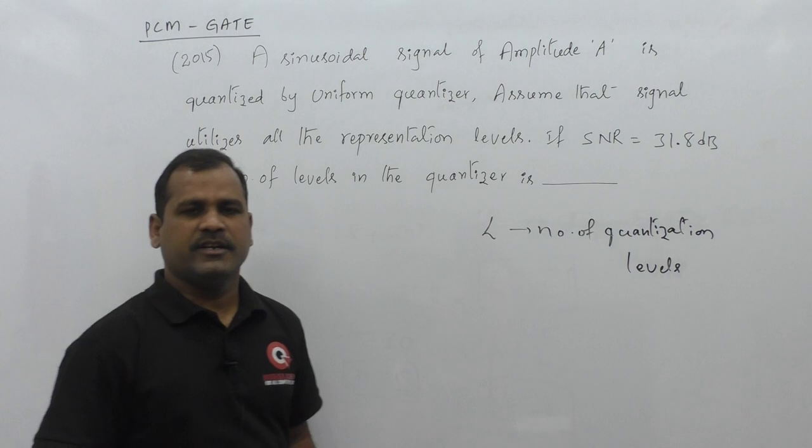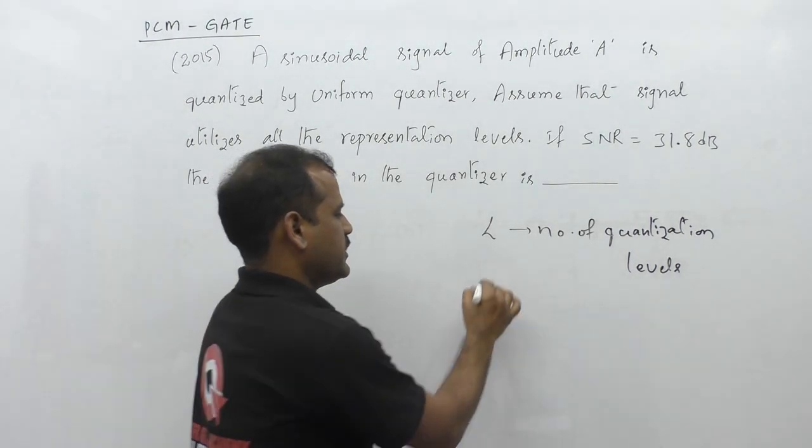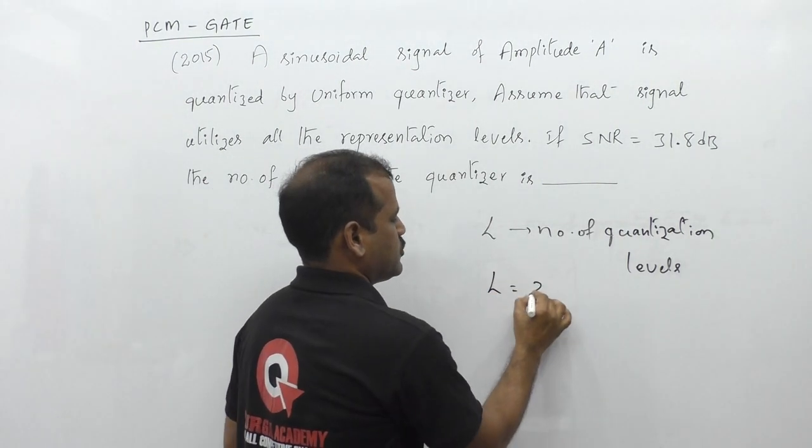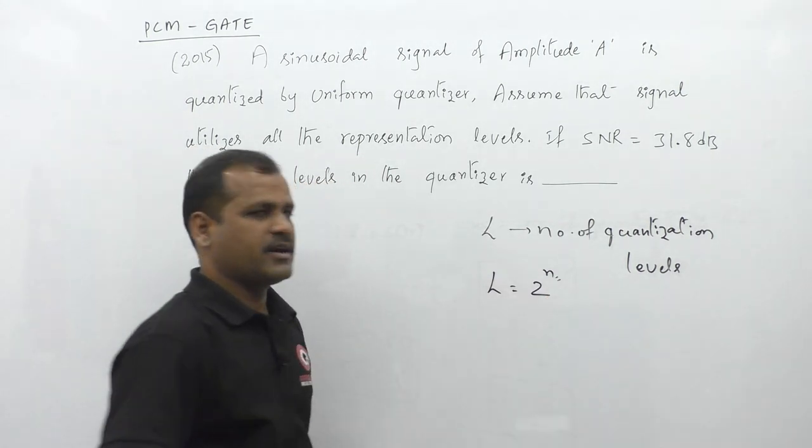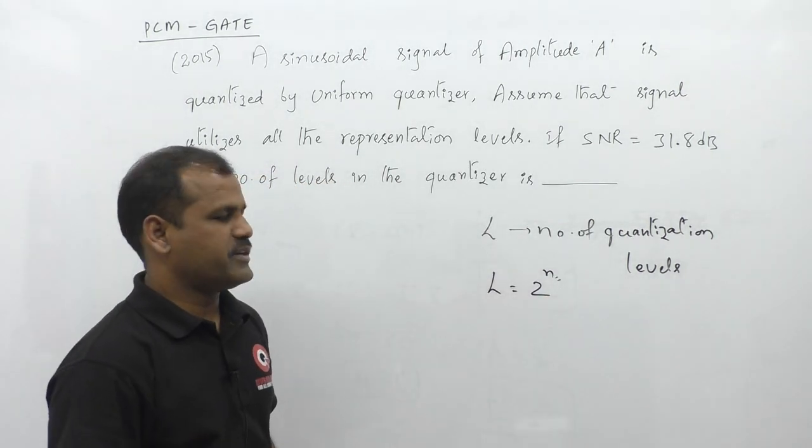L is expressed in terms of the number of bits, given by the relation L equals 2 to the power of N. So we need to find N first to calculate the number of quantization levels.